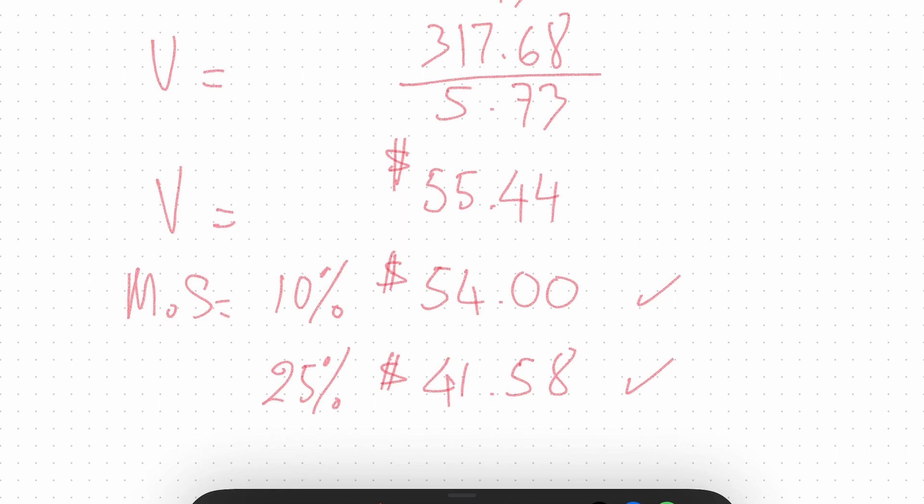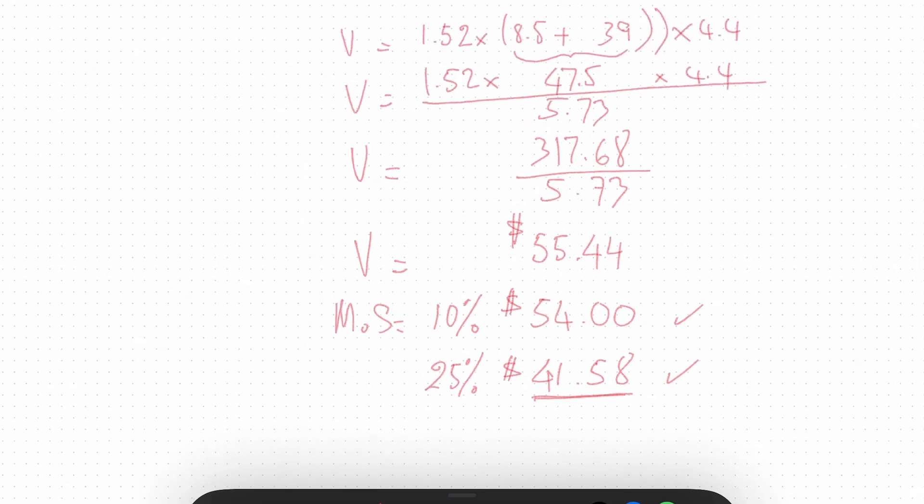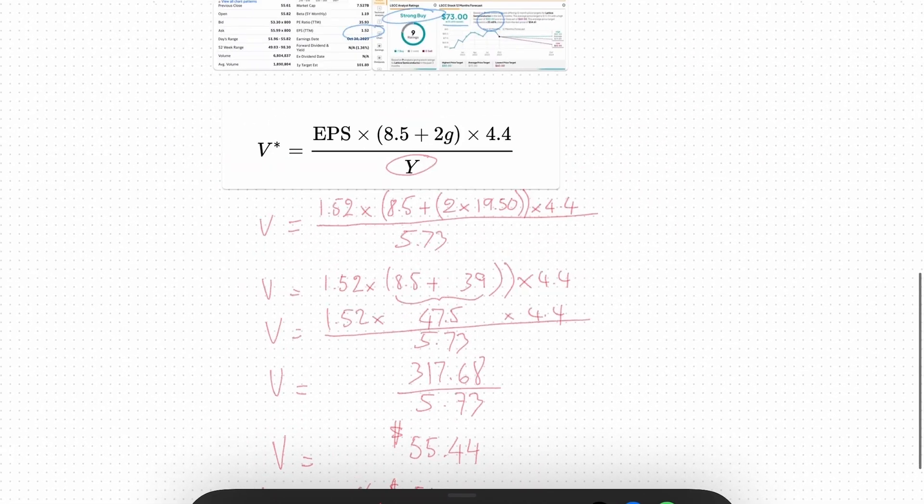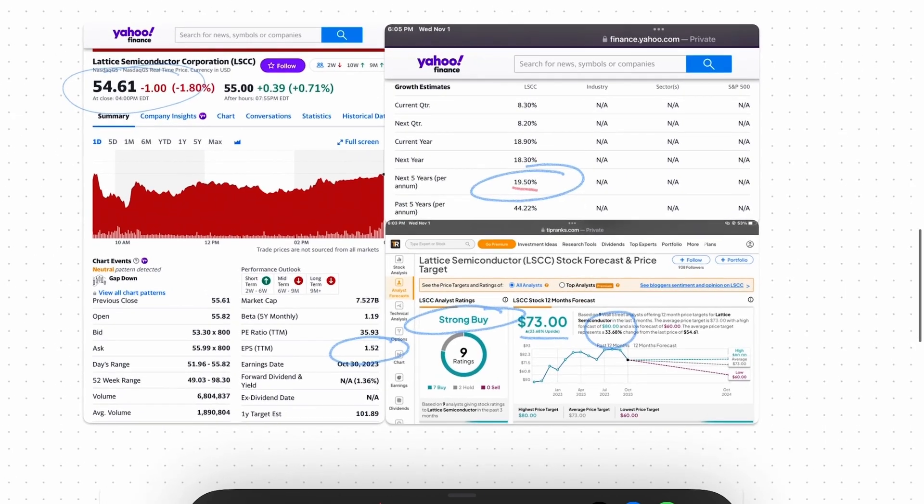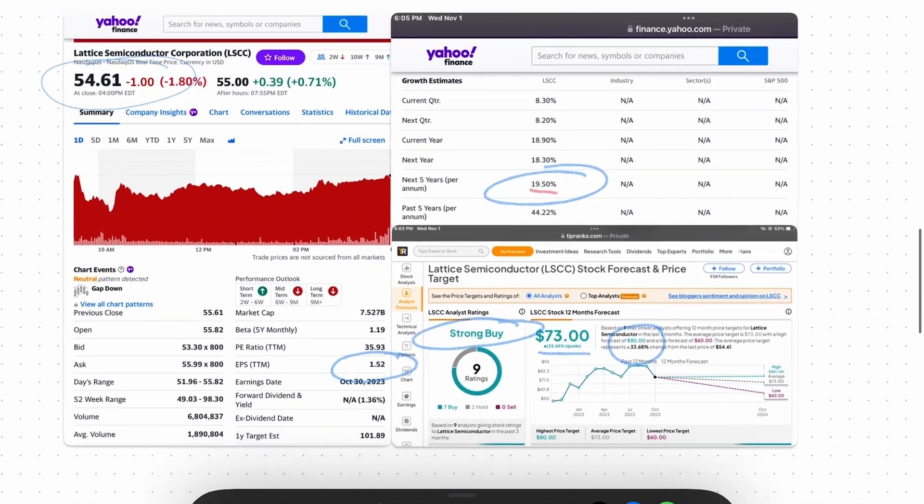If the FOMO bug bites me, then I'll buy at $54. But why not wait for it to drop a little bit more to play it safe? Because Lattice Semiconductor is a good company, I really like the company and I still do. But I want to buy it at a safe entry point, and to me, a safe entry point is about $41.58.